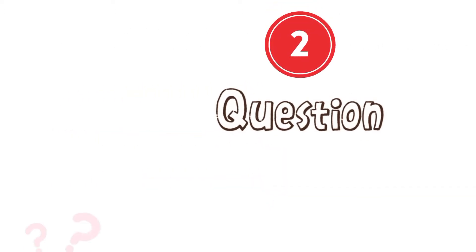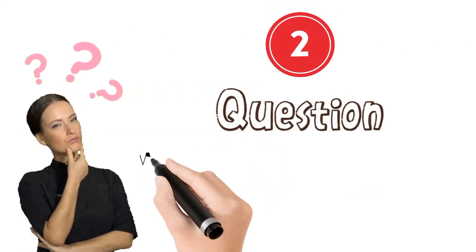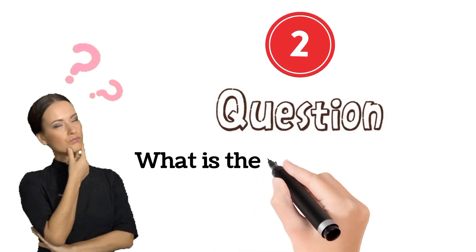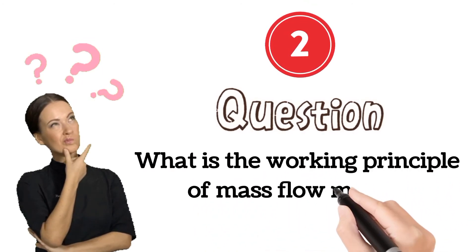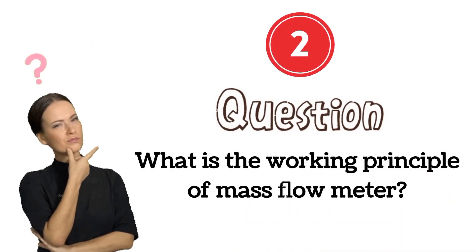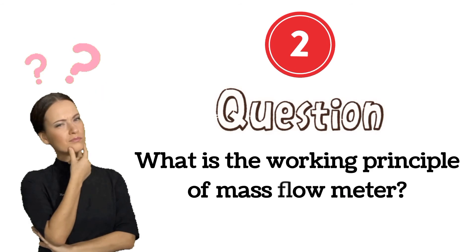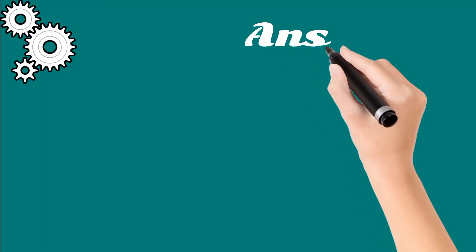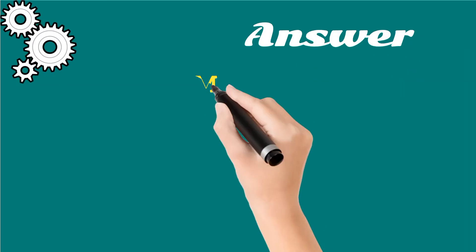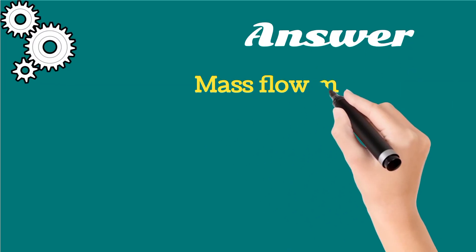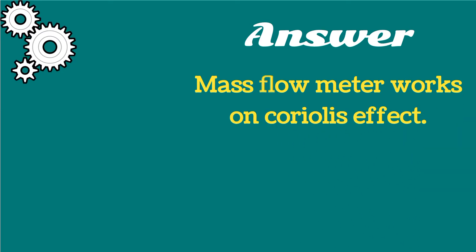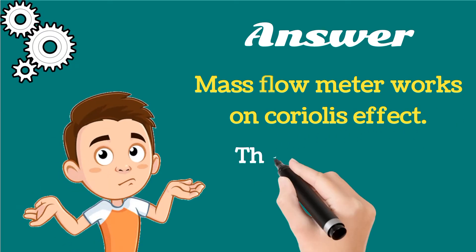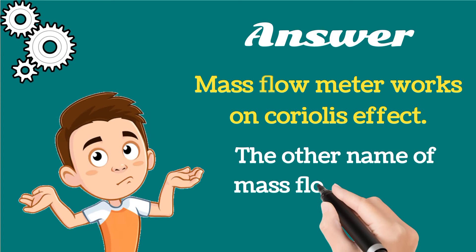The next question is: what is the working principle of a mass flow meter? This is a common question for technicians as well as engineers. The answer is that mass flow meter works on the Coriolis effect, so it is also known as a Coriolis flow meter.